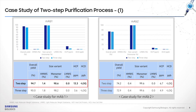To develop the two-step purification platform, we conducted four case studies with four monoclonal antibodies: mAb1, mAb2, mAb3, and mAb4. Yield, purity from the four purified monoclonal antibodies, and impurity clearance from high-molecular weight species (HMWS), low-molecular weight species (LMWS), HCP, and HCD are shown. The two-step purification platform for mAb1 and mAb2 exhibited comparabilities to the three-step purification platform.